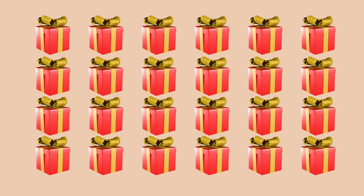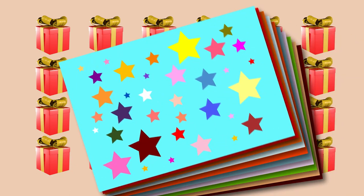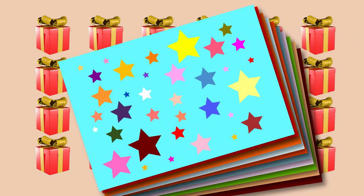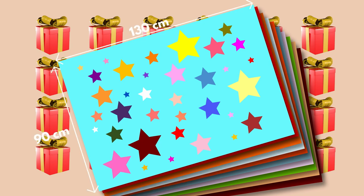24 boxes in the shape of a rectangular parallelopiped, with the dimensions 40 × 25 × 30, will be wrapped on the surface with wrapping paper with various prints. We have 10 sheets available in the shape of a rectangle with the dimensions 130 cm and 90 cm. Are these papers going to be enough to wrap the lateral surfaces of 24 boxes?